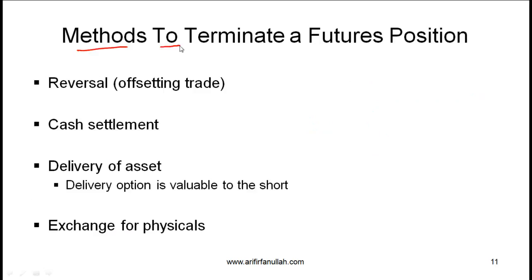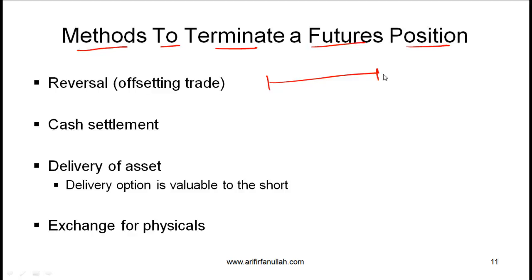Now let's talk about the methods to terminate a futures position. There is a fair amount of detail in the curriculum on this, but as long as you understand the core points that should be good enough. One method of terminating a futures contract is to simply take a reverse or offsetting position. For example, if you are in a contract to buy a certain underlying expiring on July 31st and you took a long position, you can take an offsetting position a few days before expiry.